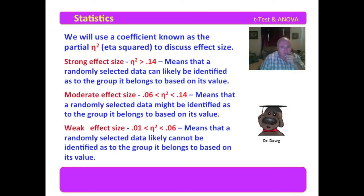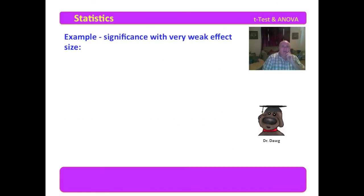I've done some very clever things for you here. In discussing effect size, I have drawn you a parallel that the effect size tells us if we randomly select a data point, how likely it is that we would be able to predict the group that it belongs to. That's what effect size really is all about. Now, I want to give you an example of where you might have a strong significance but a very weak effect size.